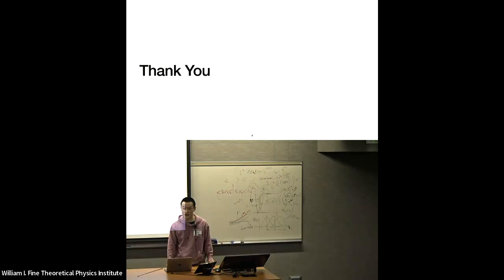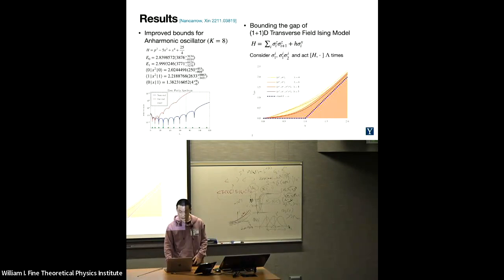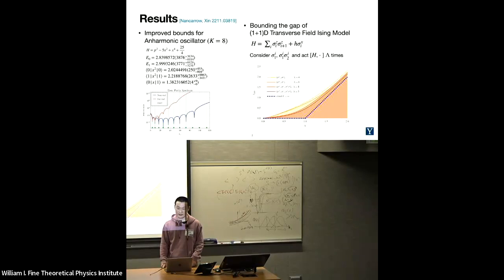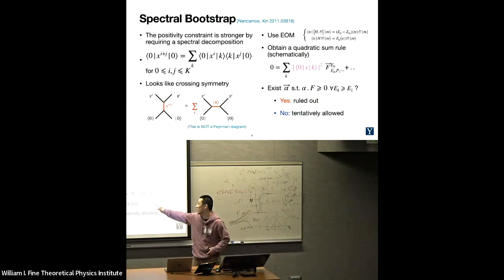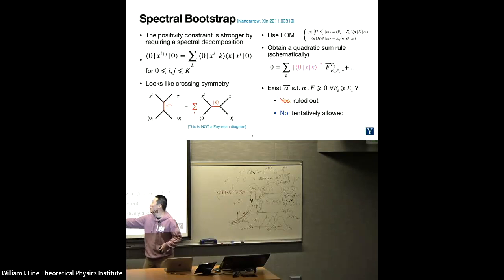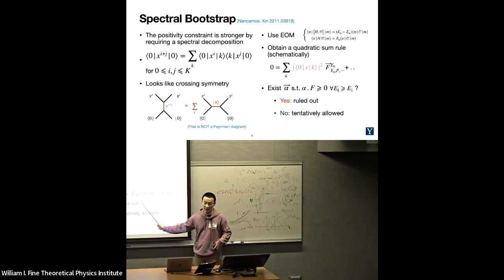There is essentially no change in the technology. The idea is, no matter what shows up in this insertion of identity, it all contributes something positive to the crossing equation, so no matter what shows up in the middle, it's all considered, it's all bounded.